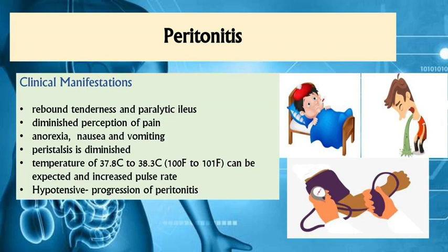Diminished perception of pain may be due to the ongoing inflammatory process. Anorexia, nausea, and vomiting are also experienced. Peristaltic movement is also diminished for these clients. Clients also experience fever, with a temperature ranging from 37.8 to 38.3 degrees Celsius. They are also tachycardic and hypotensive if peritonitis progresses.